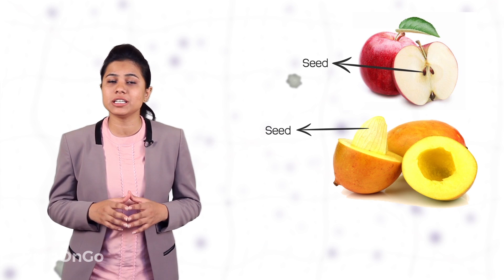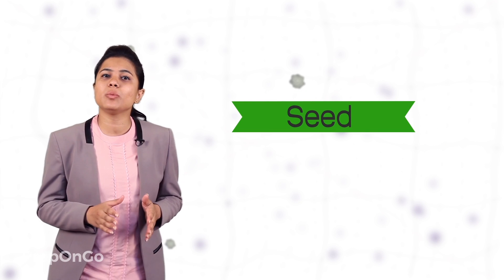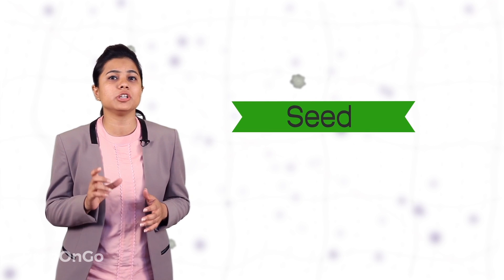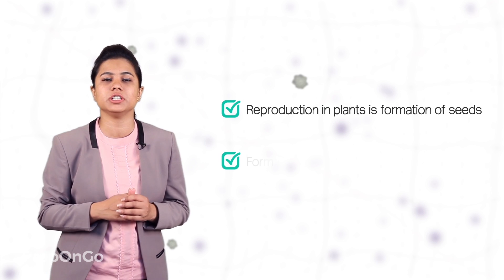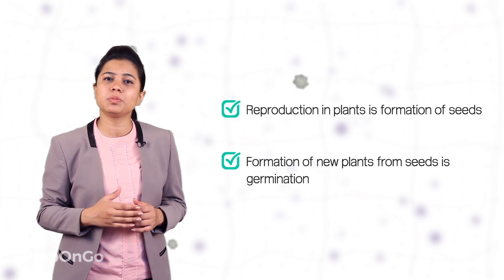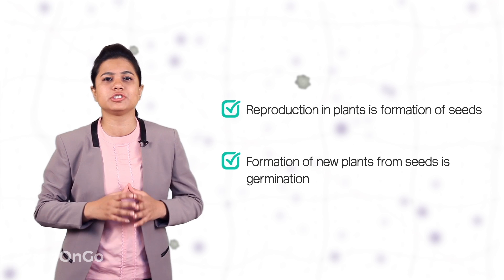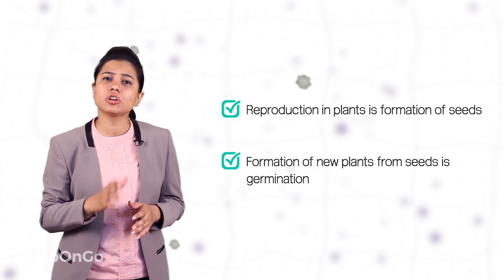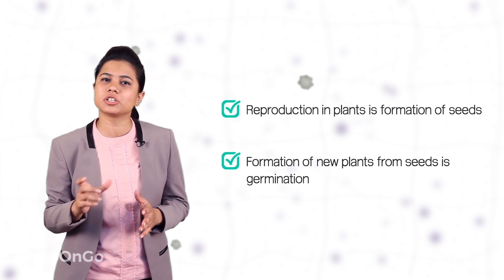We have all seen different fruits like apples, mangoes and many more which contain seeds, and when the seeds are sown in soil they grow into a new plant. So the important part here is seeds — they are the ones responsible for producing a new plant. Now the process of reproduction in plants is the process of formation of seeds. Formation of new plants from seeds is not a reproduction process but is altogether a different process called germination. So you should not confuse reproduction in plants with a new plant arising from seeds — it is the formation of seeds.